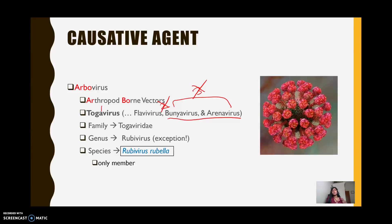Within the family Togaviridae, we have two different genera. First, we have the alphavirus, and secondly, we have the rubivirus. Within the rubivirus there is only one member, and that only species just so happens to be our causative agent, otherwise known as rubivirus rubella. It is important to note that the rubivirus is the exception — it is the only togavirus that is actually not an arthropod-borne vector.